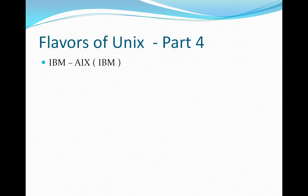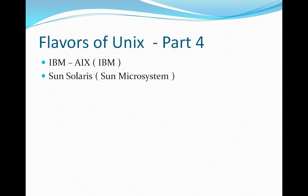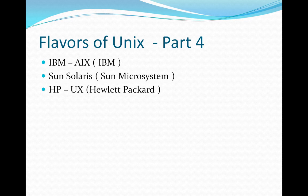The first one is IBM AIX — IBM has developed the IBM AIX operating system, which is a UNIX operating system. They took the UNIX open source and created their own IBM AIX. Then we have Sun Solaris, developed by Sun Microsystems; HP-UX, developed by Hewlett Packard; and Linux Red Hat.